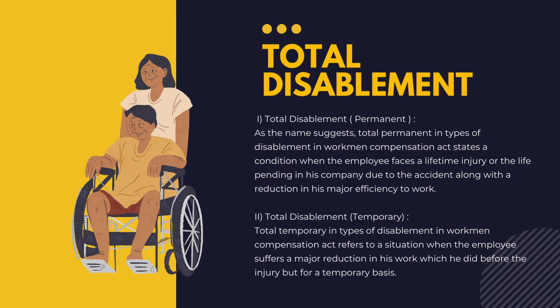Firstly, talking about total disablement — total permanent disablement refers to a condition where the employee faces a lifetime injury during his time in the company due to an accident, along with a major reduction in efficiency to work. For example, if Mr. X is working in a marketing department and comes across an accident leading to paralysis in his legs, he cannot continue his field work. This is an example of permanent total disablement.